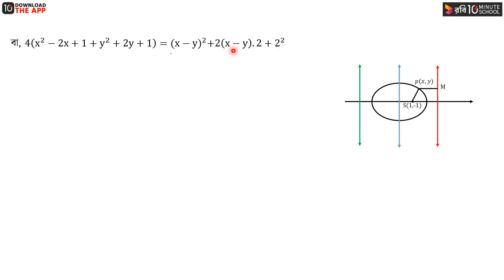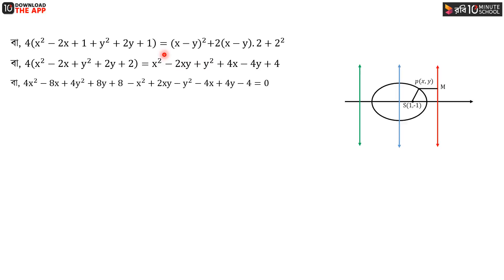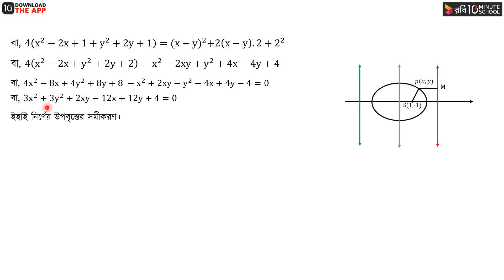With the size of x minus 2x plus 4, we get 3x² plus 3y² plus 2xy minus 12x plus 12y plus 4 equal to 0. That's how we get the conic section (sumi-koron).